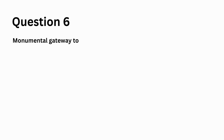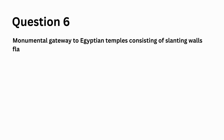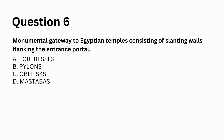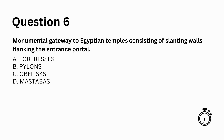Monumental gateway to Egyptian temples consisting of slanting walls flanking the entrance portal: a. Fortresses, b. Pylons, c. Obelisks, d. Mastabuz. Answer: b. Pylons.